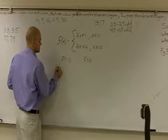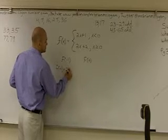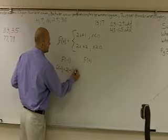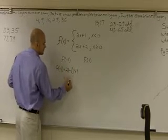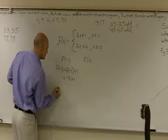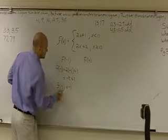Therefore, f of negative 1 equals 2 times negative 1 plus 1. 2 times negative 1 is negative 2 plus 1. Therefore, f of negative 1 equals negative 1.